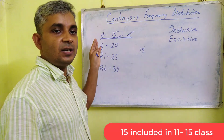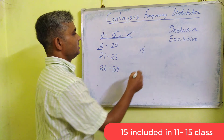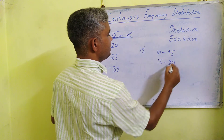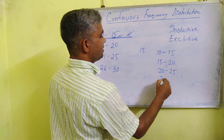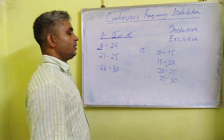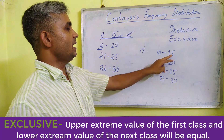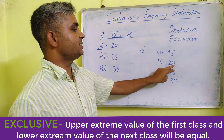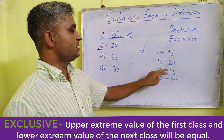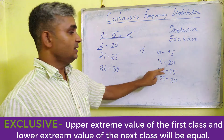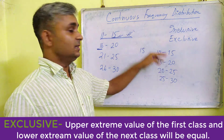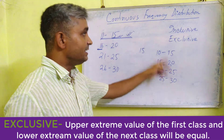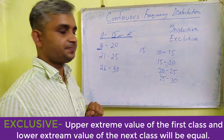This is the inclusive series or class limit. Now, exclusive. See, if the data is 10 to 15, 15 to 20, 20 to 25, 25 to 30 — notice here, the upper limit of one group and the lower limit of the next group are the same. For example, the upper limit of this class boundary is 20, and the lower limit of the next class boundary is also 20 — the same or equal value. This equal value of upper limit and lower limit indicates the exclusive method or class boundary.